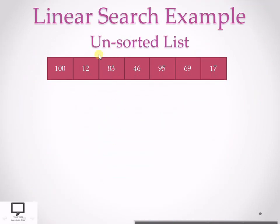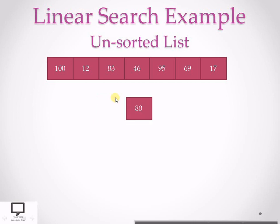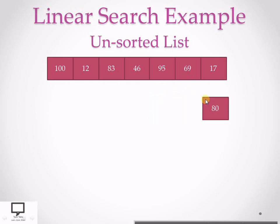Now an example where the search is unsuccessful — searching for 80 in the same unsorted list. Compare 80 with 100 — not equal; with 12 — not equal; with 83 — not equal; with 46 — not equal; with 95 — not equal; with 69 — not equal; with 17 — not equal. We are at the end of the list and still have not found 80. The search is unsuccessful.